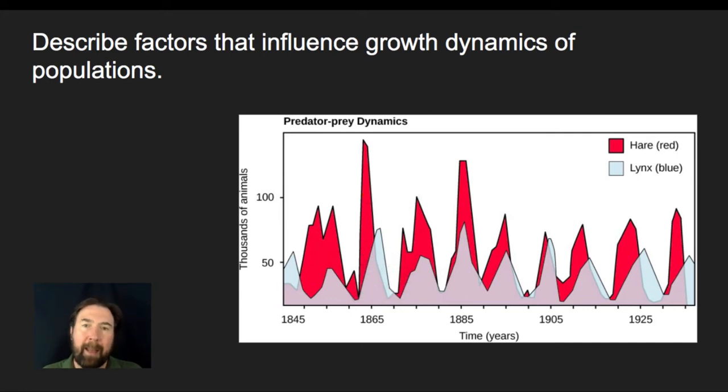And so we can see that both the factors of competition within a population of hares is going to play a role on how large that population can get as it struggles for existence to get the resources. But also other populations are going to play a role on how large an individual population can get. Now, predator-prey is one of those instances, but competition for resources is another, whether it is within the same species or between different species that are struggling to gain those resources.